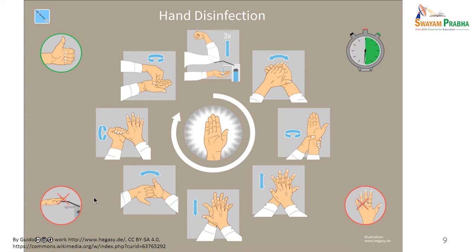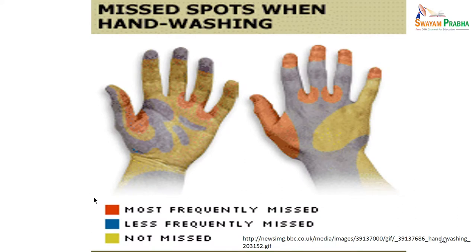Remember, all rings should be removed before hand washing. The diagram shows spots most frequently missed during hand washing in red, less frequently missed areas in blue or grey, and areas usually not missed in yellow.